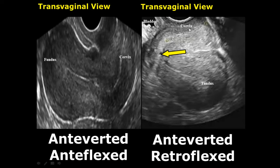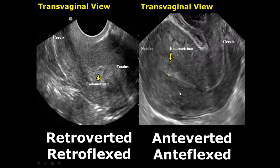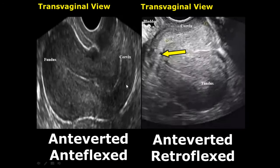In the anteverted and retroflexed uterus, the cervix is again facing upward anteriorly, and the body of the uterus is bending away from the bladder, that is posteriorly. You can see the bladder in the top left corner of the image. Another feature is that in retroflexed, the fundus or the body will appear on the right side of the image.